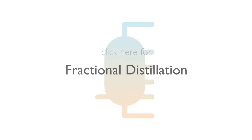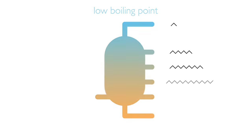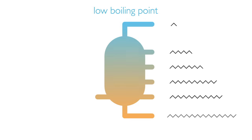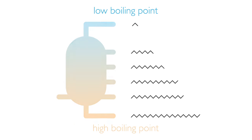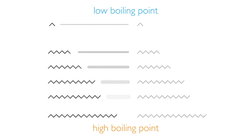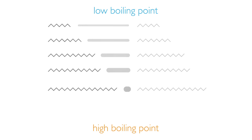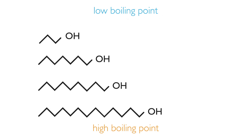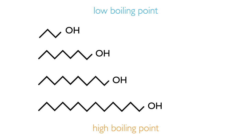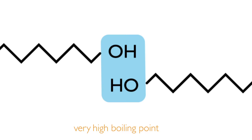In our video on fractional distillation, we discussed how increasing chain length increases the boiling point due to increased intermolecular forces. The alcohols follow this same trend, but their boiling point is even higher than their comparable alkanes, and this is due to the hydrogen bonding.